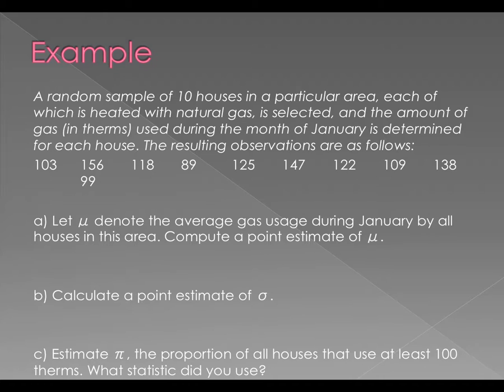So I gave you the 10 observations there. A, let mu denote the average gas usage during January by all houses in the area. That's the population parameter. We don't know the population, so we didn't go to every house. We instead went to these ten. Compute a point estimate of mu.